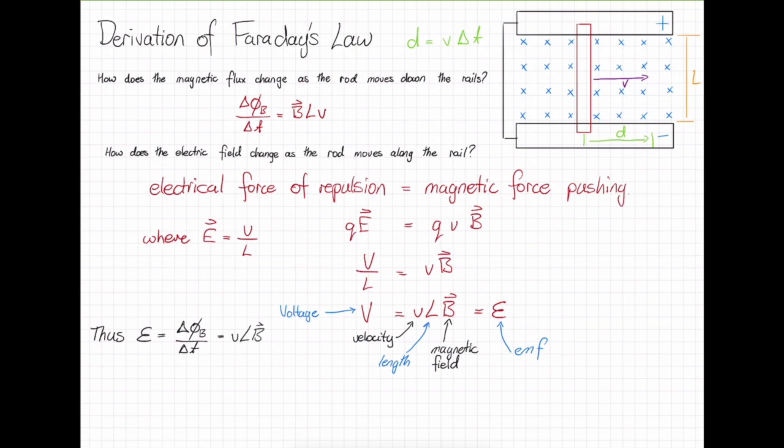However, this is different to what we have written down previously, which was that the EMF is equal to minus N times our change in magnetic flux over a change in time. In our example, we used one wire, so N equals one. The negative comes from Lenz's Law, which we'll cover soon.